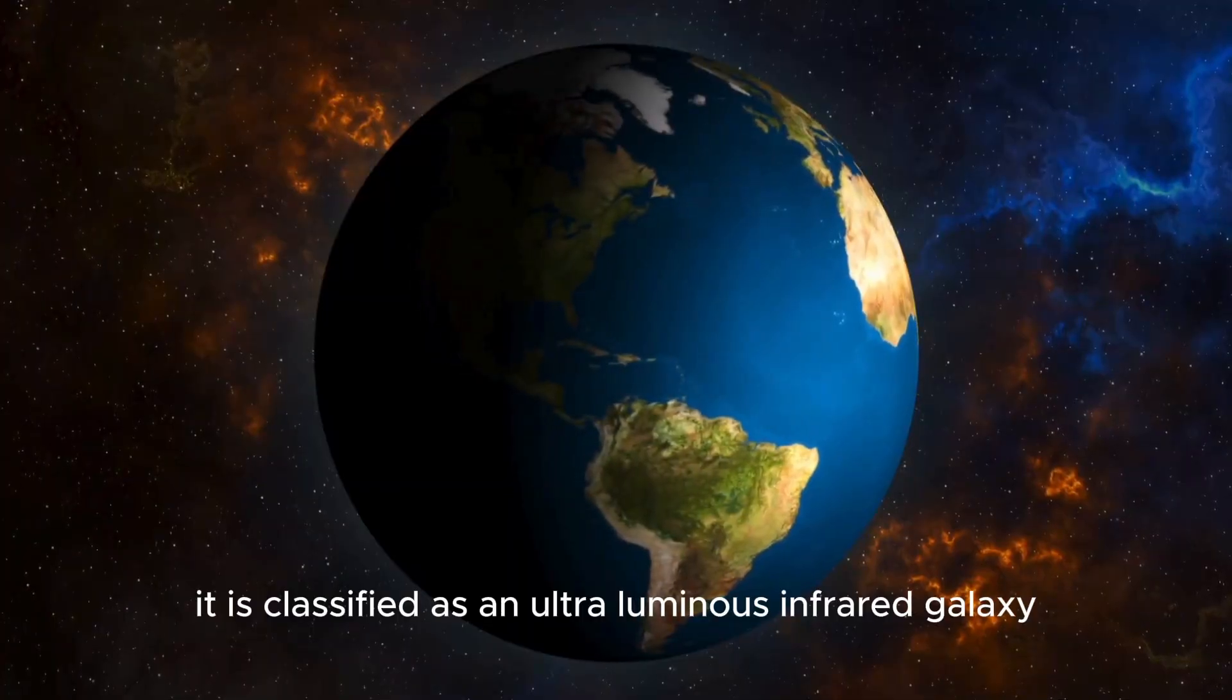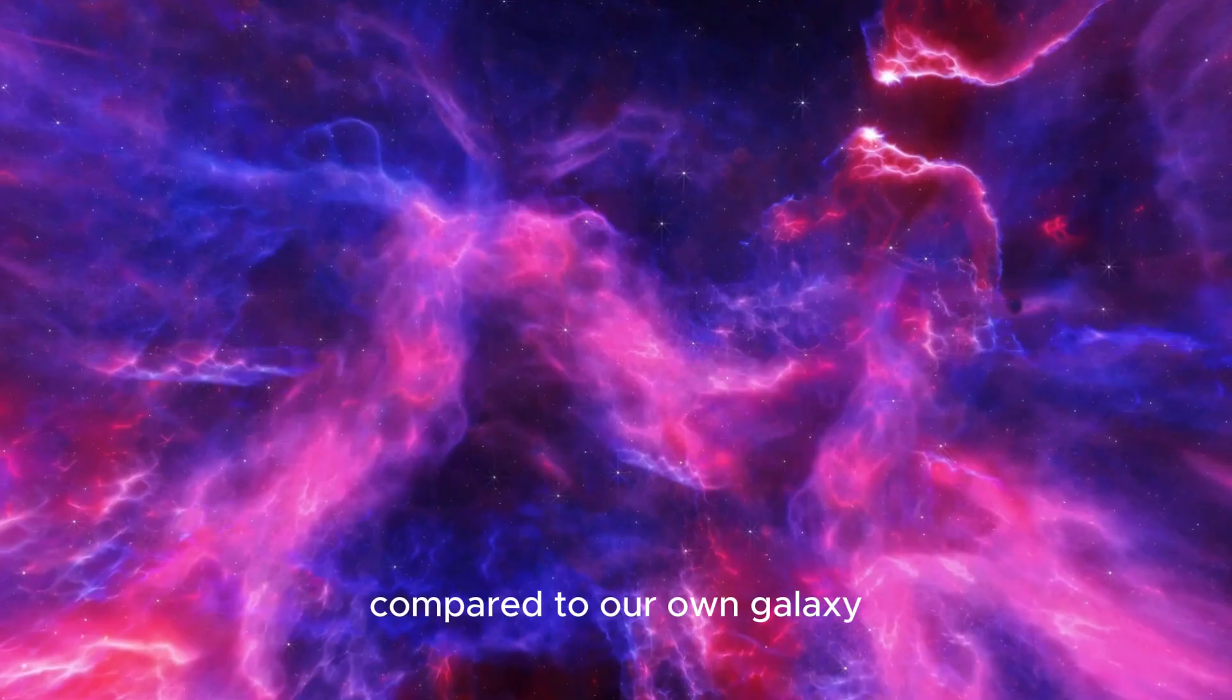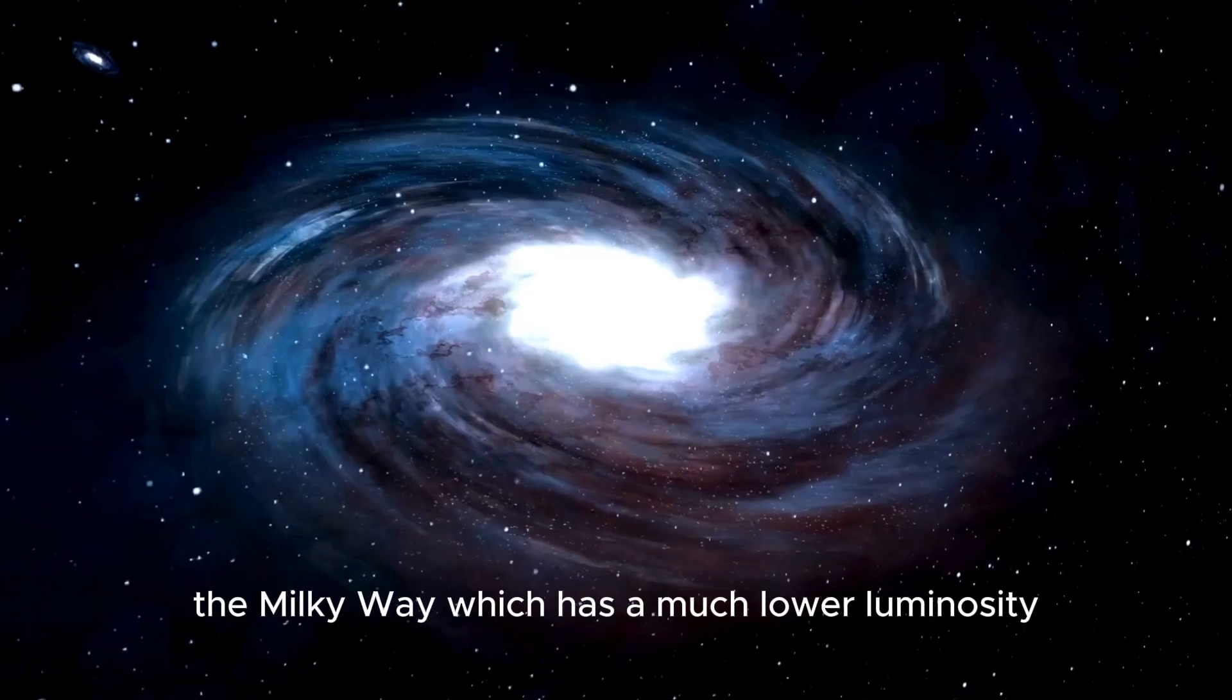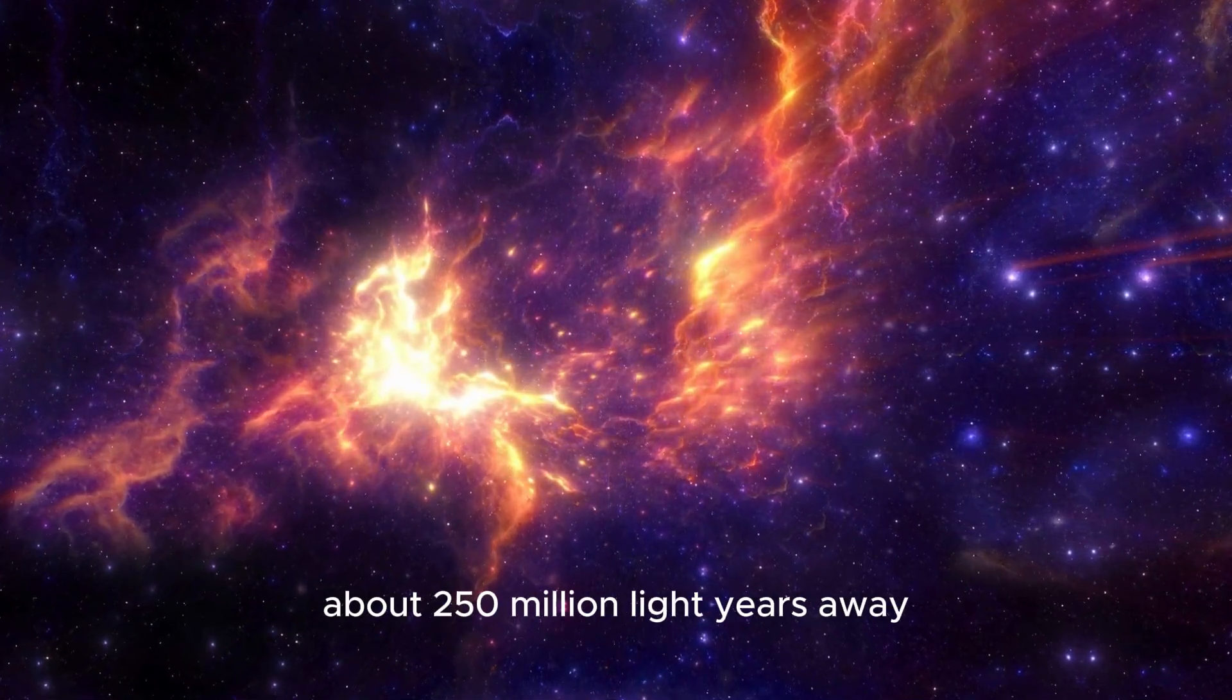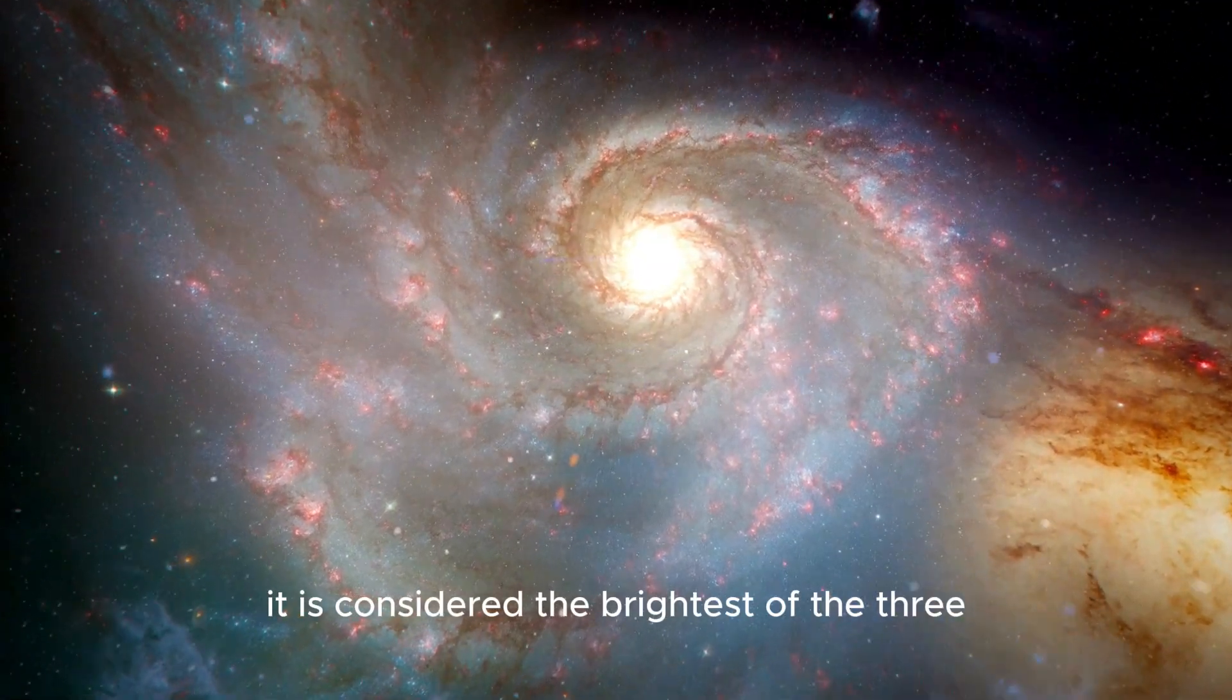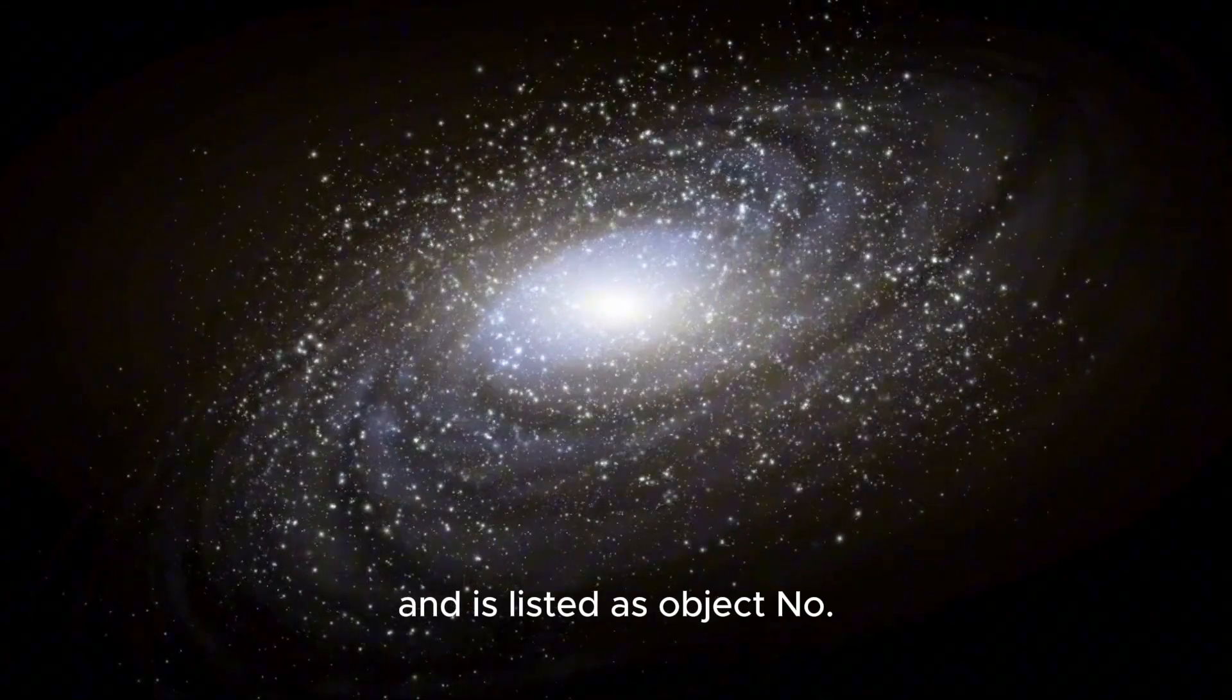It is classified as an ultraluminous infrared galaxy with a luminosity of a trillion suns, compared to our own galaxy, the Milky Way, which has a much lower luminosity of about 10 billion suns. ARP-220 is located in the constellation of Serpens, about 250 million light years away. It is considered the brightest of the three closest galactic collisions to Earth and is listed as object number 220 in the Atlas of Peculiar Galaxies.